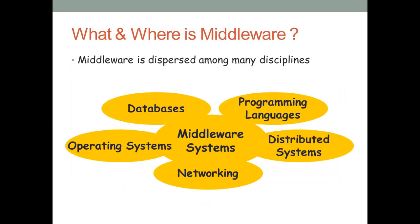Your middleware system can directly communicate with a database, and it can also communicate with any kind of programming language — Java J2EE, PHP, or other code. It also supports distributed systems, third-party integrations like LDAP, security models, and networking. Your middleware system sits on a particular networking domain, enabling communication between different networks.